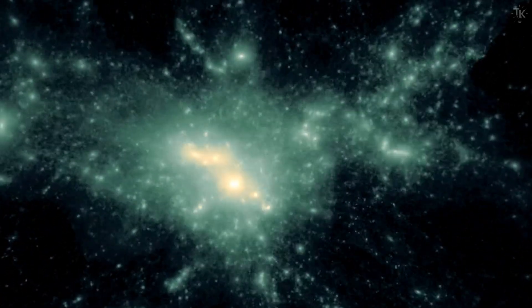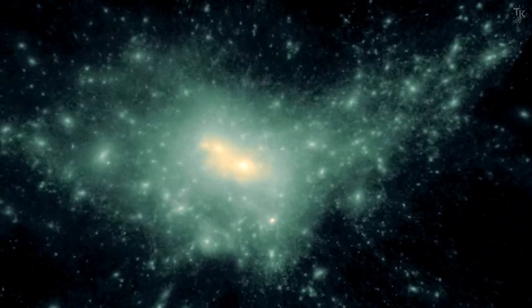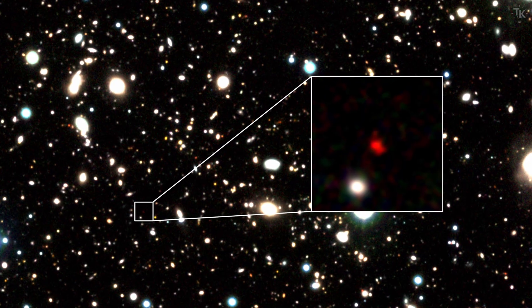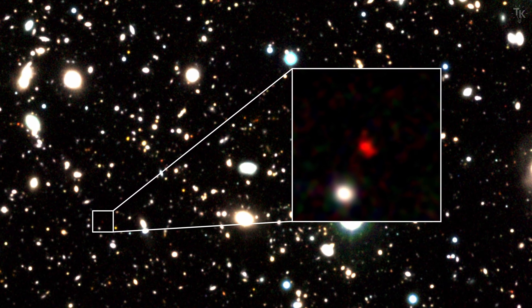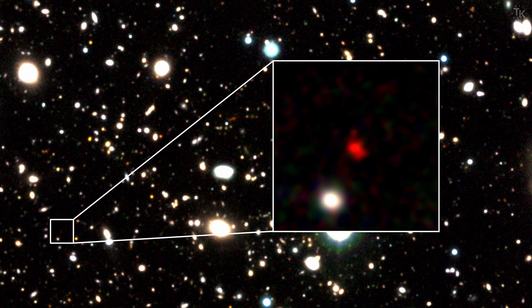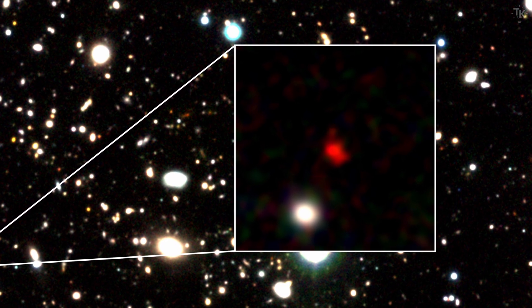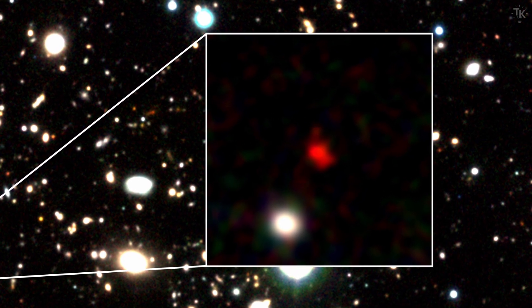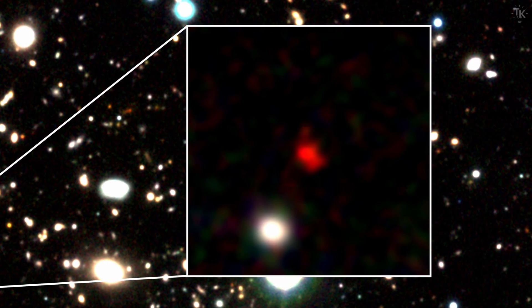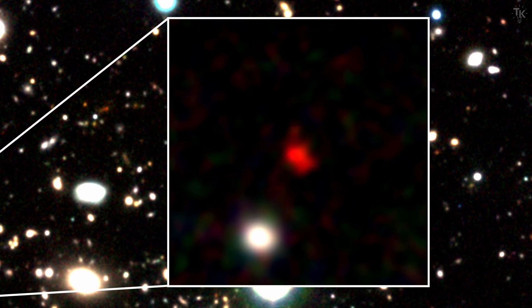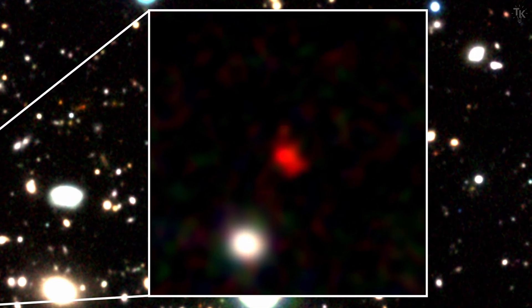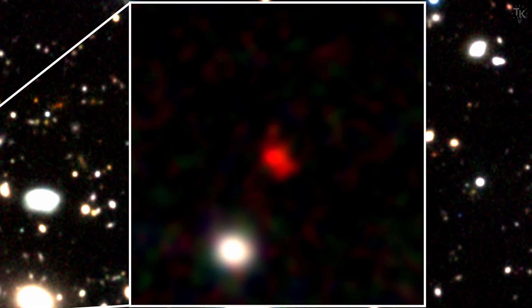Now, let's take a look at what an early galaxy actually looked like. This is a galaxy as it appeared 13.5 billion years ago. It was born only about 300 million years after the beginning of the universe. Its diameter was about 1,600 light years. Since the Milky Way has a diameter of 100,000 light years, this galaxy was quite small.